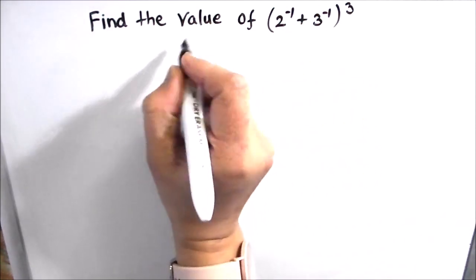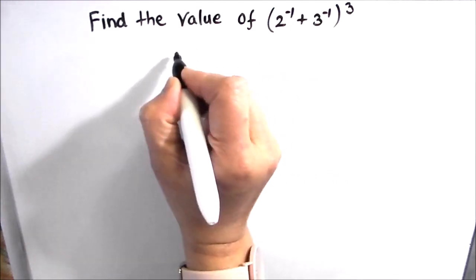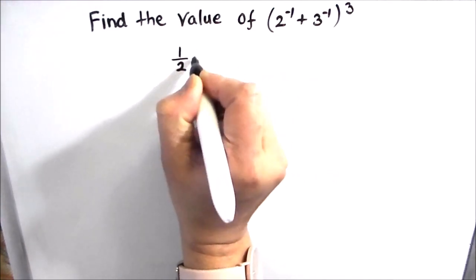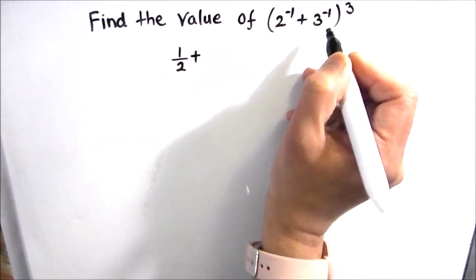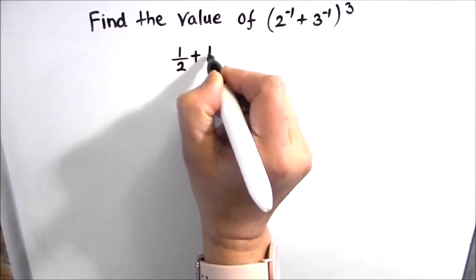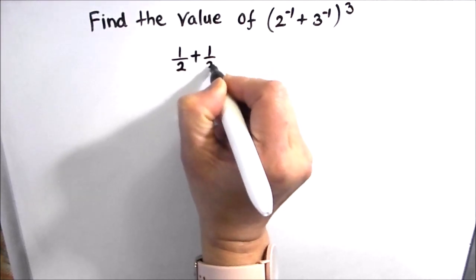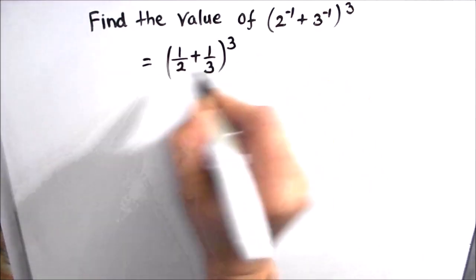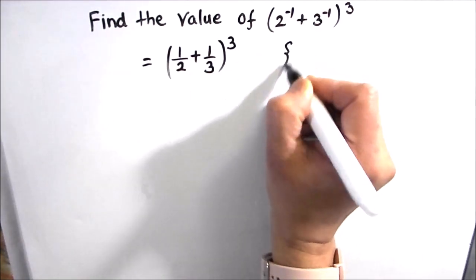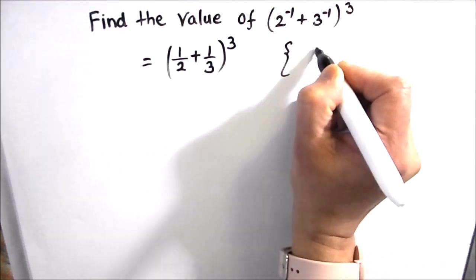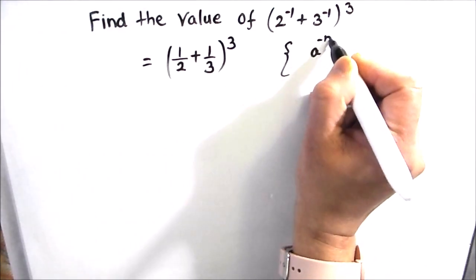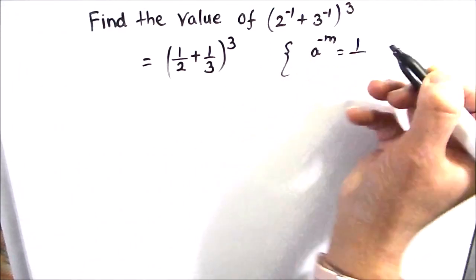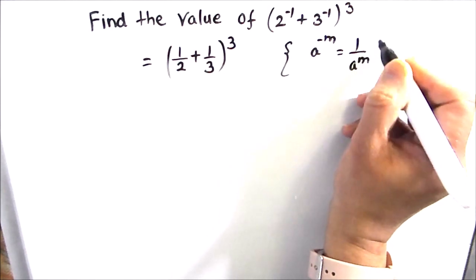So 2 raised to power minus 1 can be written as 1 upon 2, and 3 raised to power minus 1 can be written as 1 upon 3, whole raised to the power cube. Here we have used the law of exponents which says a raised to power minus m is equal to 1 upon a raised to power m.